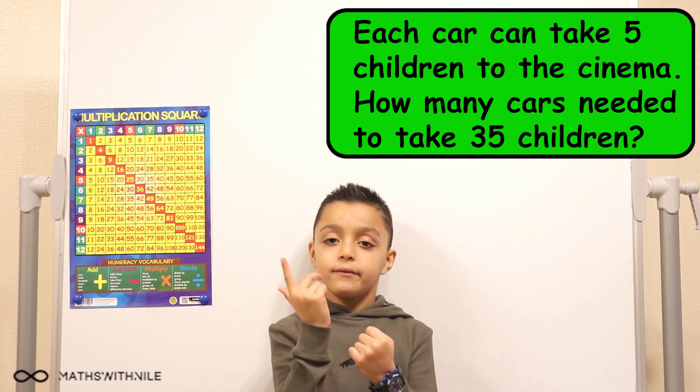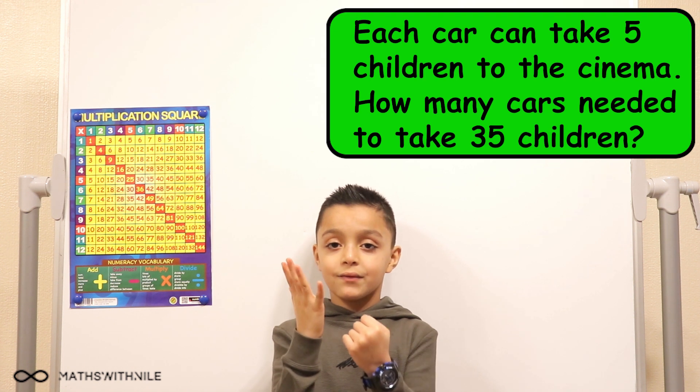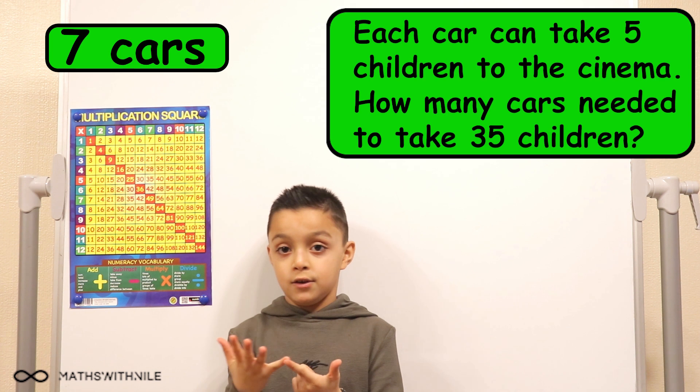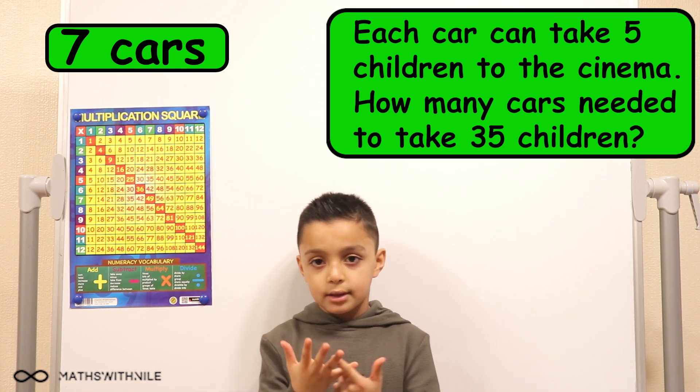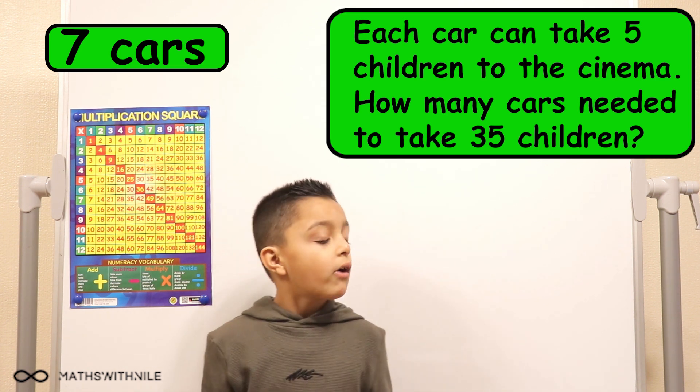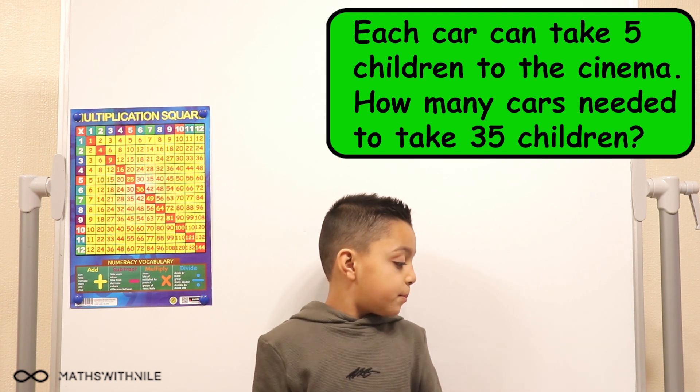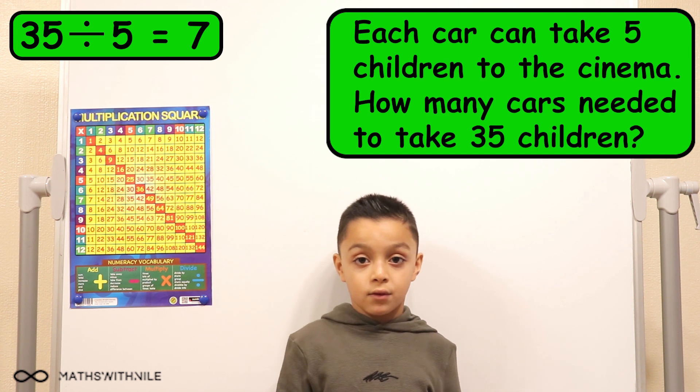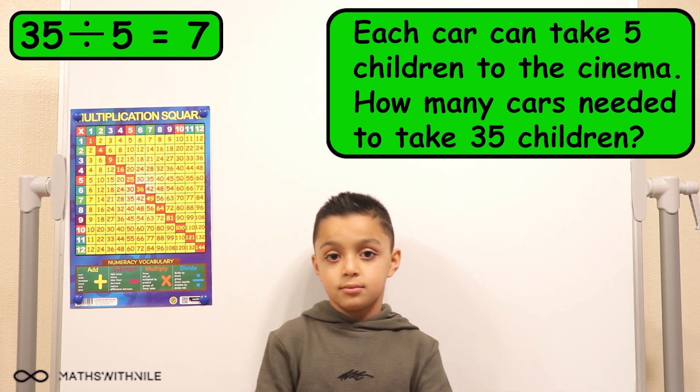Five, ten, fifteen, twenty, twenty-five, thirty, thirty-five. So how many? Seven. So what would the division number sentence be? It will be 35 divided by five equals seven. Excellent. Very good explanation, Niall.